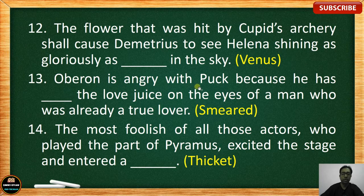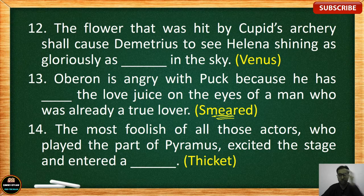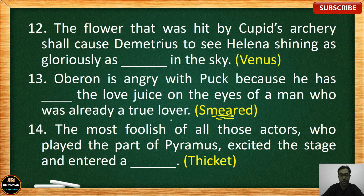Number 13: Oberon is angry with Puck because he has blanked the love juice on the eyes of a man who was already a true lover. The correct answer is 'smeared.' Smeared means to apply something — like oil, mud, or any liquid or fluid — on the face.